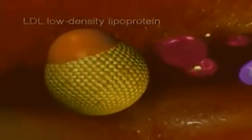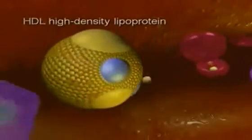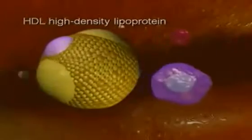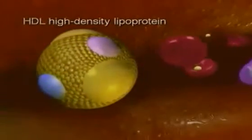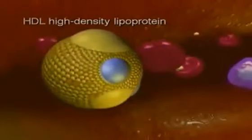The cholesterol in atherosclerotic plaques is derived mainly from excess LDL cholesterol. High-density lipoprotein or HDL is believed to function as a retrieval service, removing cholesterol from the circulation to the liver for excretion. For this reason, HDL is often referred to as the good cholesterol. Low levels of HDL cholesterol are considered an independent risk factor for cardiovascular disease.